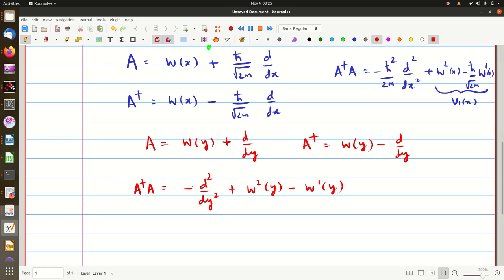This we can now see as the new operator and similarly A A dagger should give us minus d squared upon dy squared plus w square of y plus w dash of y. Now, what we want is we want to call this as Hamiltonian H1 and we will call this as the partner Hamiltonian H2.